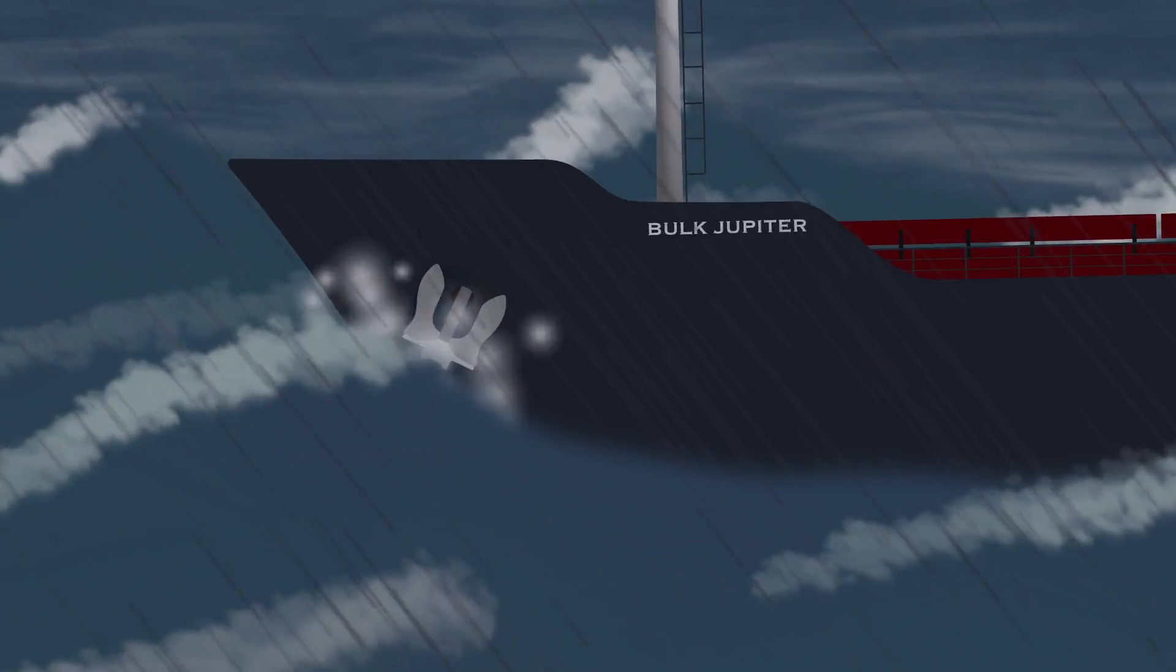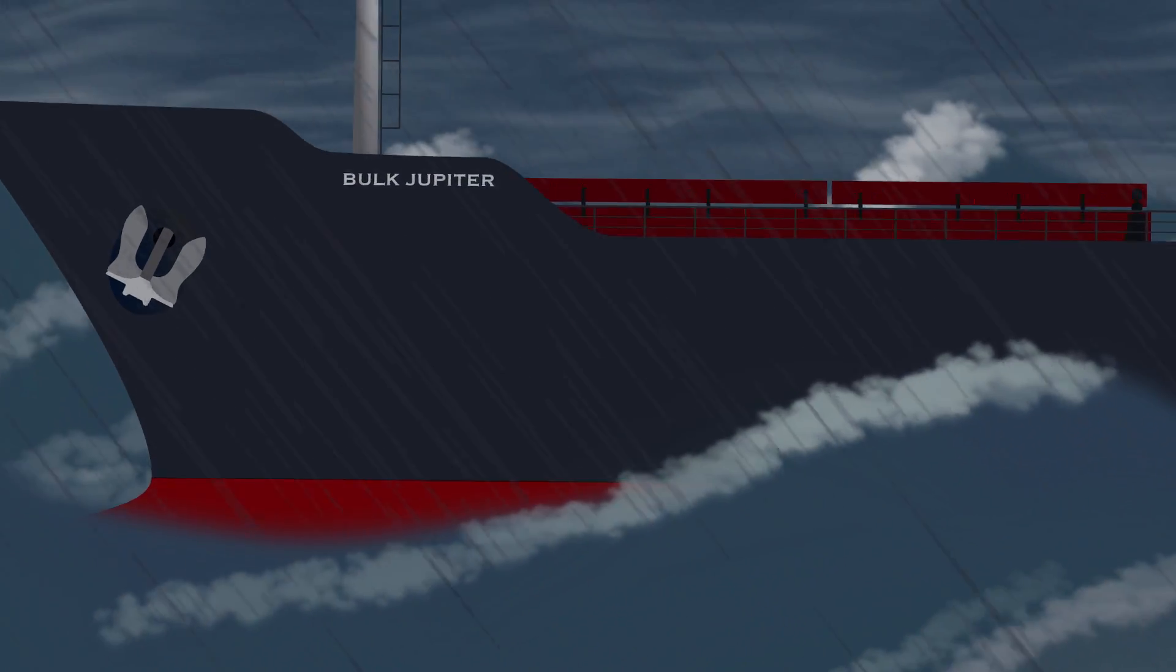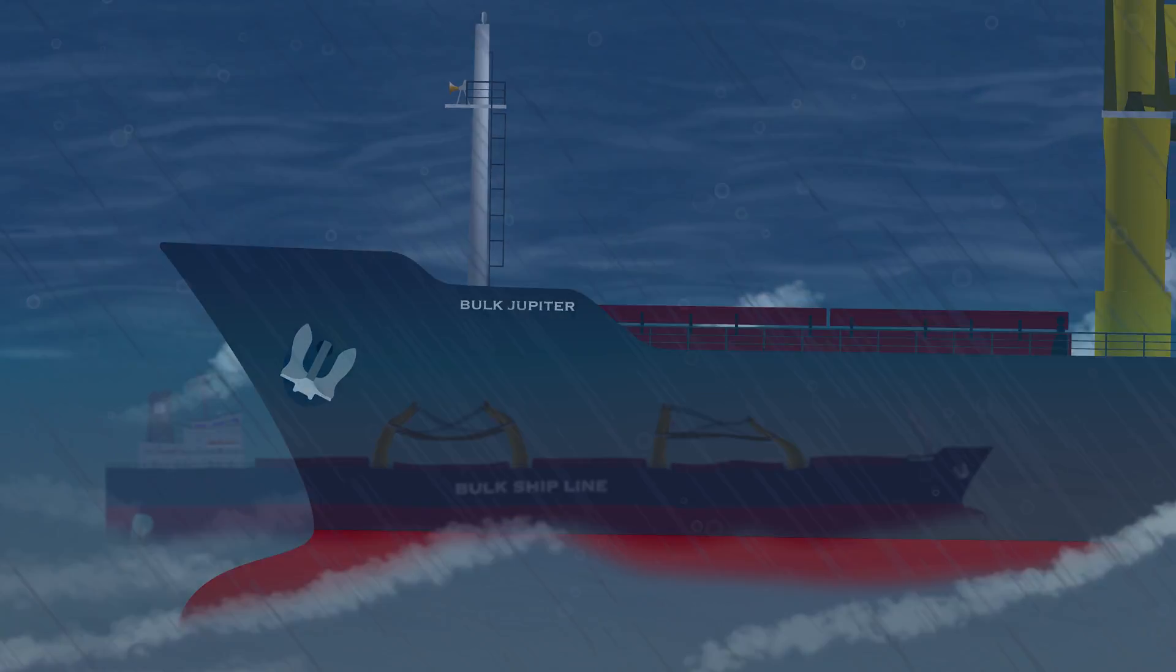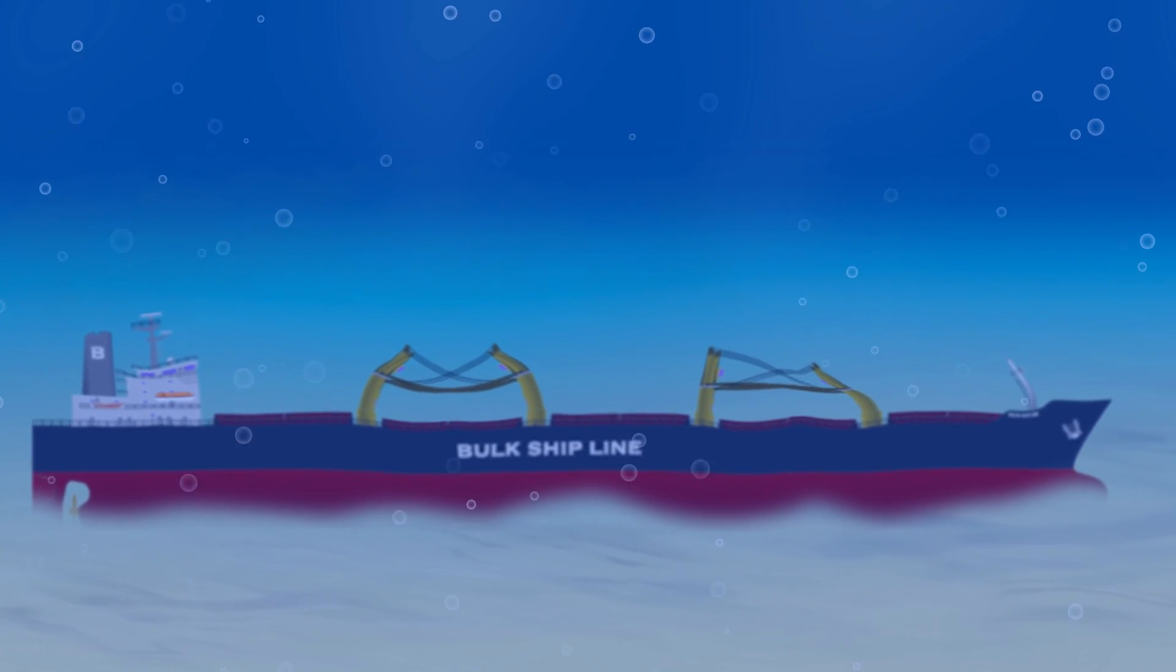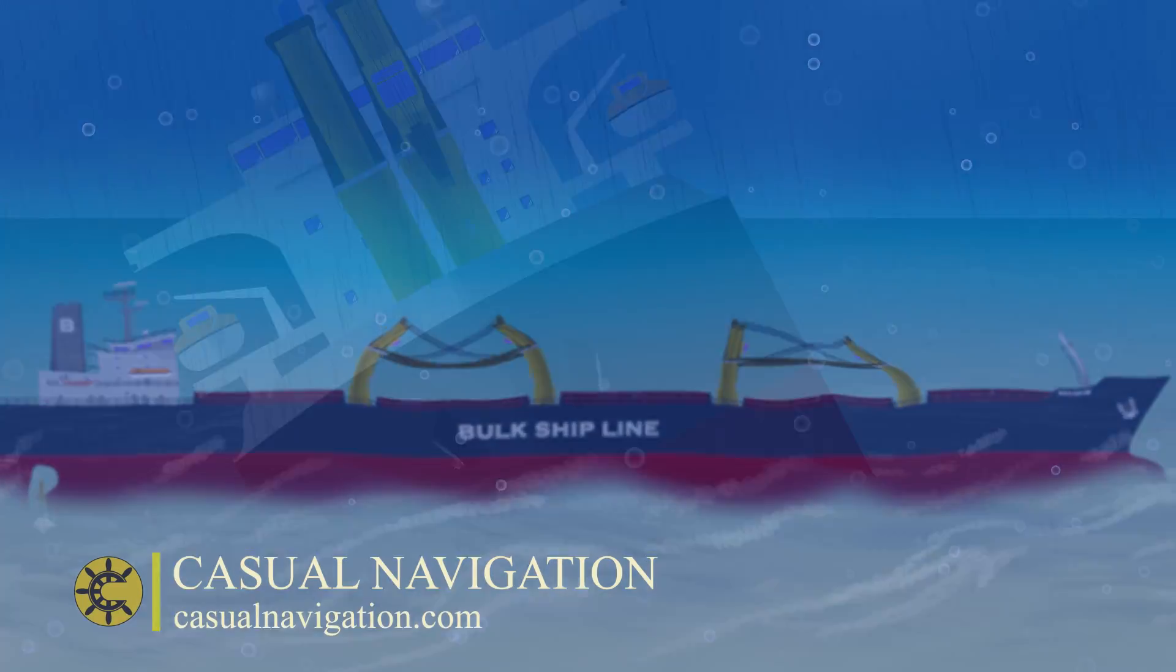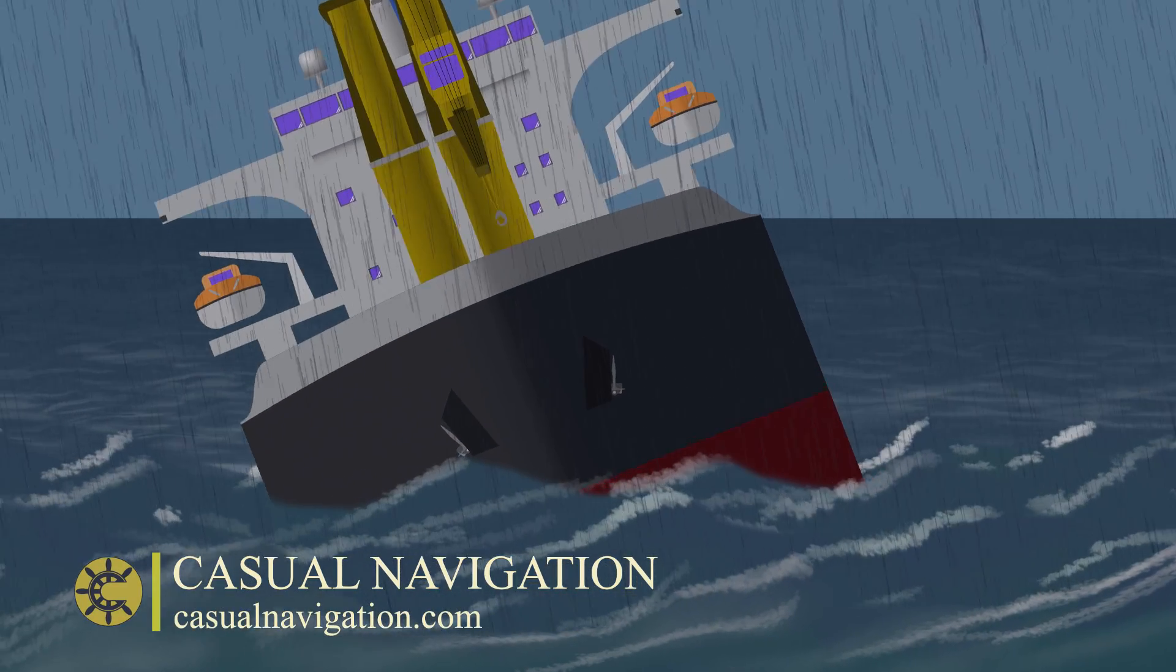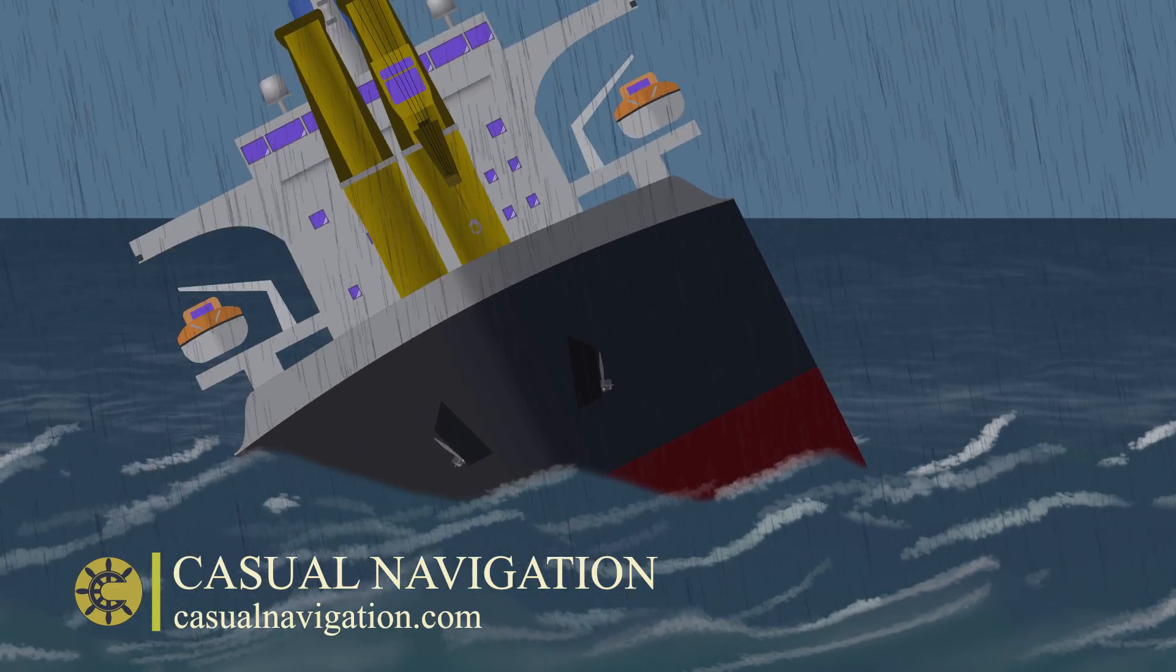In 2015 the cargo vessel Bulk Jupiter capsized in the remnants of a tropical storm, most probably due to the liquefaction of a cargo of bauxite. I say probably because the exact cause was left undetermined due to a lack of evidence since the vessel was never recovered. So what is liquefaction and why do I think this was the cause of her loss?